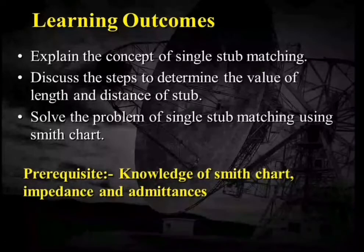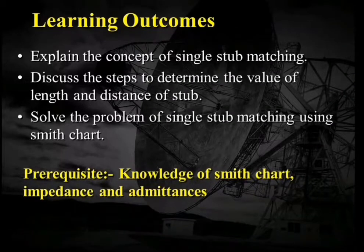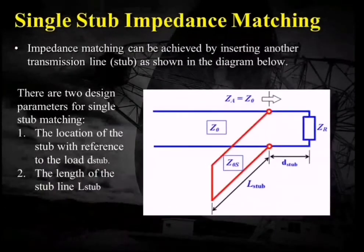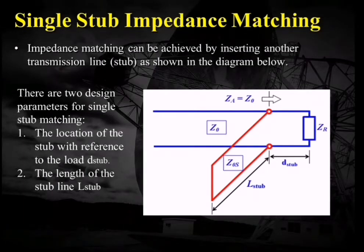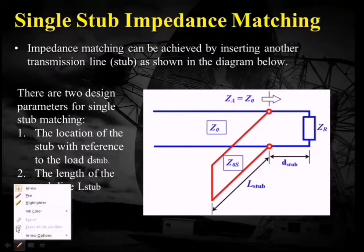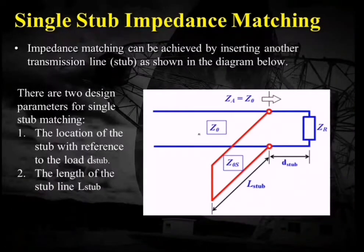The prerequisite for this lecture is the knowledge of the Smith chart, impedance, and admittances. So let us first discuss impedance matching. As we all are aware, impedance matching is done to transfer maximum power from the input to the output, or to simply make our characteristic impedance Z0 equal to ZR.